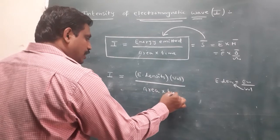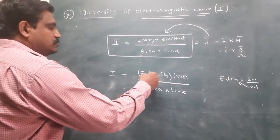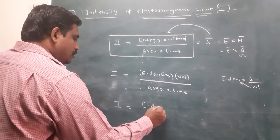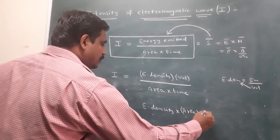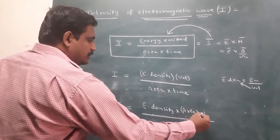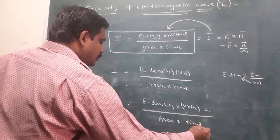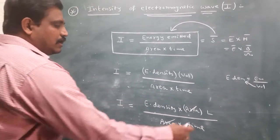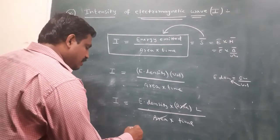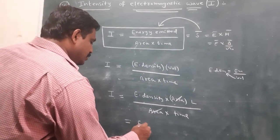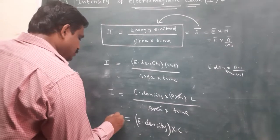Volume can be written as area into length. Substituting, intensity equals energy density into volume divided by area into time. The area terms cancel. Length divided by time is nothing but velocity. Therefore, intensity is nothing but energy density into C.